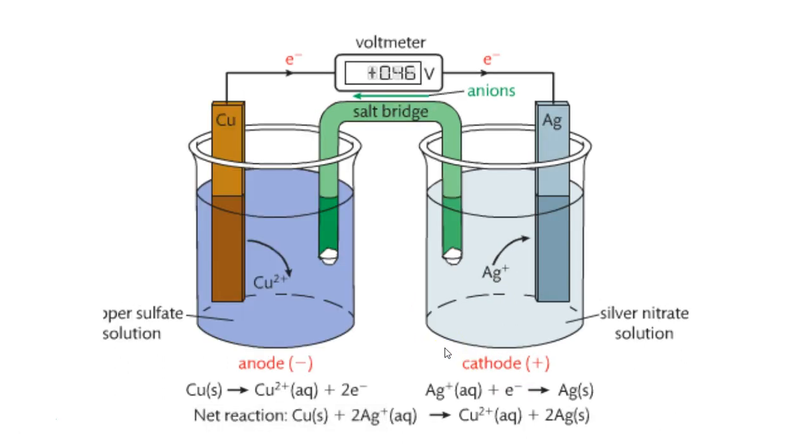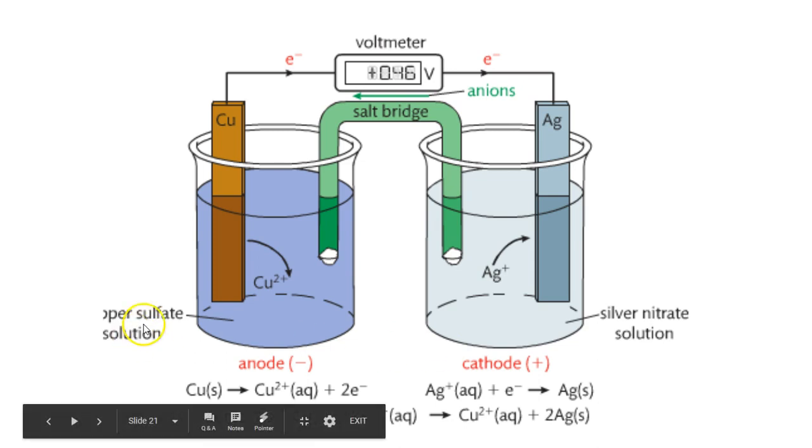One more example here, copper and copper sulfate solution. Silver and silver nitrate solution. Copper is more reactive, that's why it forms the anode. And silver is less reactive, it forms the cathode.